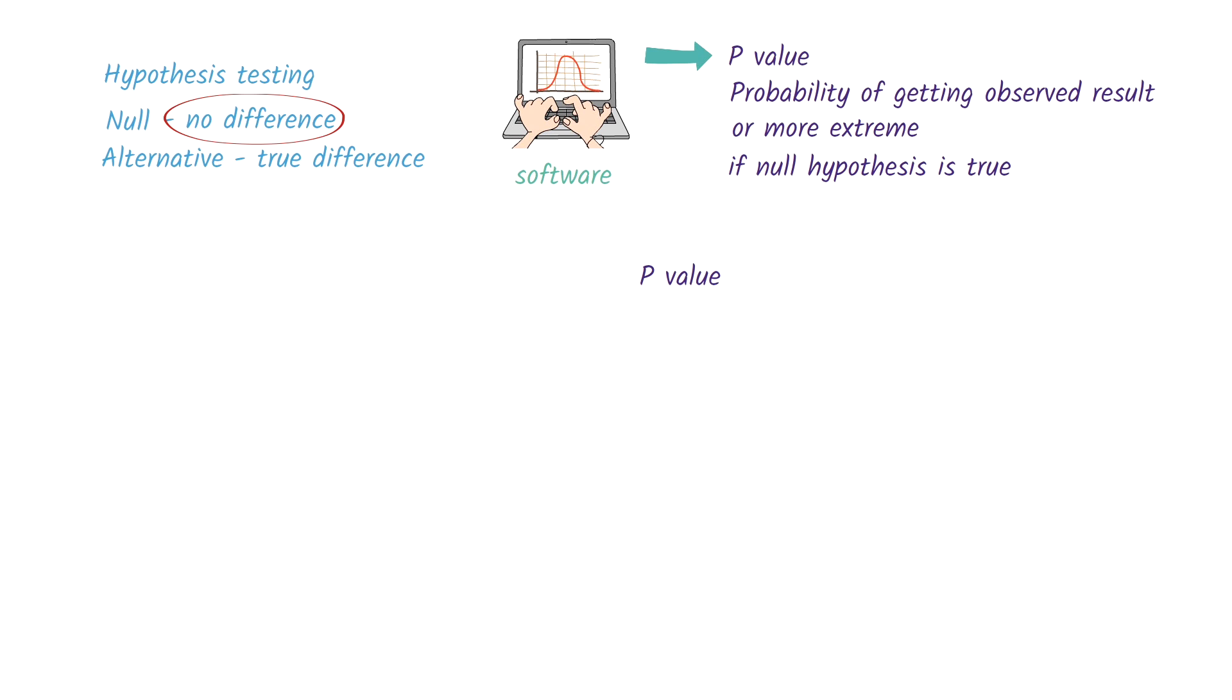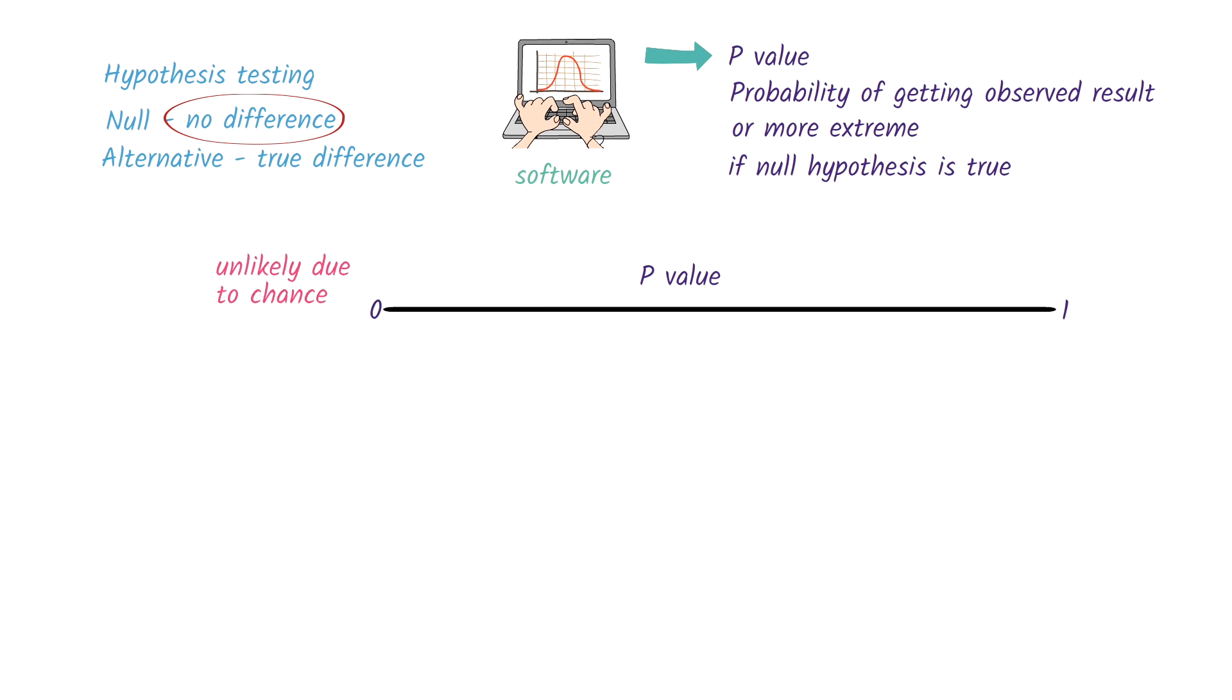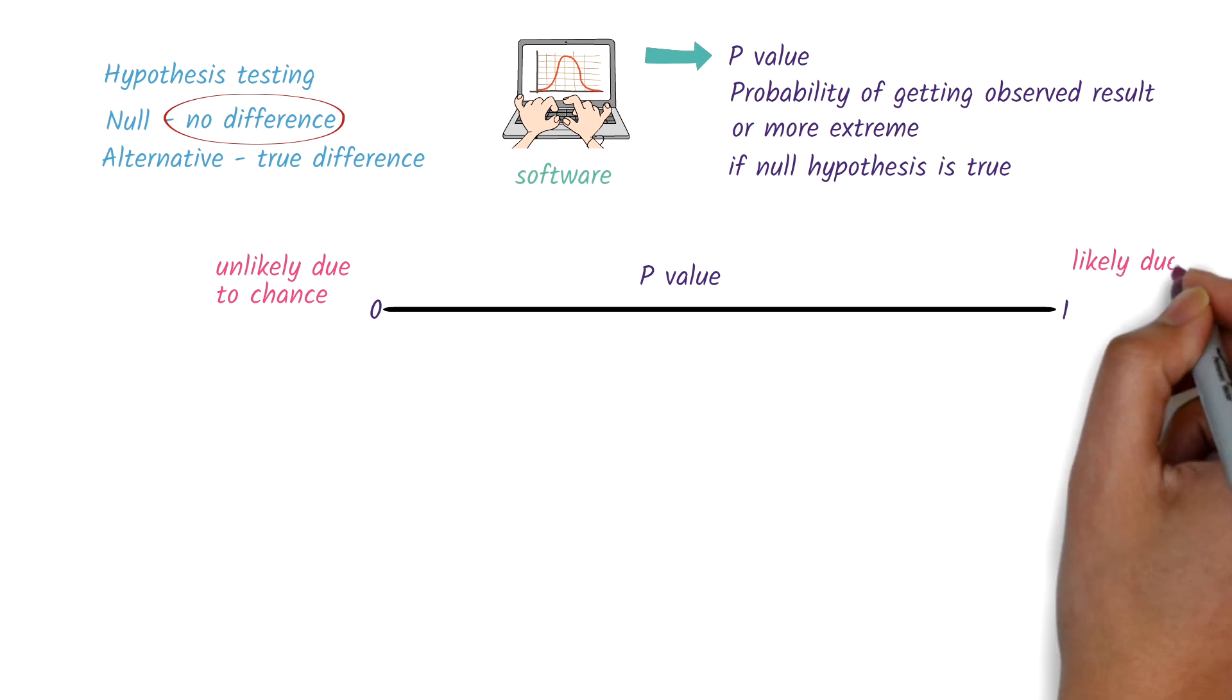The p-value can range from 0 to 1. A small p-value, closer to 0, suggests that the result is unlikely to occur by chance. On the other hand, a large p-value, closer to 1, suggests that it is likely to have occurred by chance.